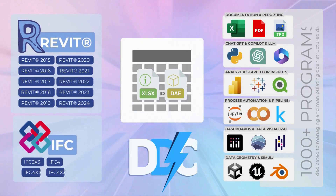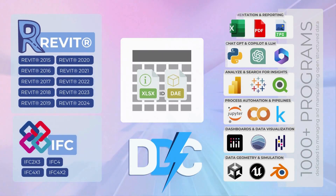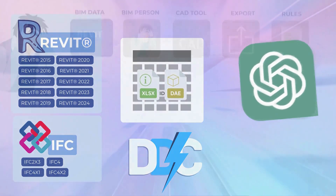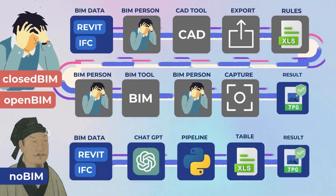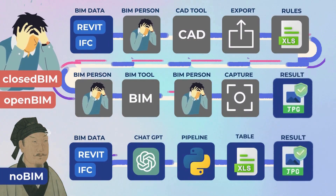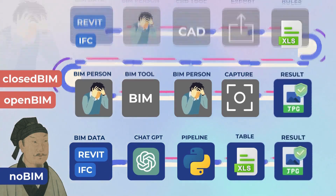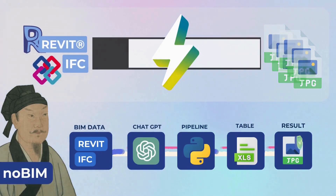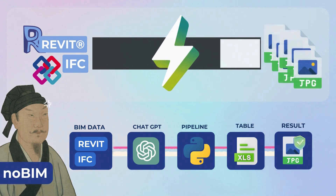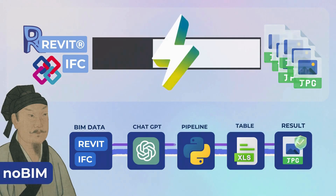We can also use the ChatGPT solution code to create a script that automates the application of the same process logic to any number of future Revit and IFC files. And instead of spending time opening files and manually generating tables and images, we can use the ChatGPT code to fully automate the process and remove the human element from the supply chain in processing hundreds or thousands of future Revit and IFC projects.